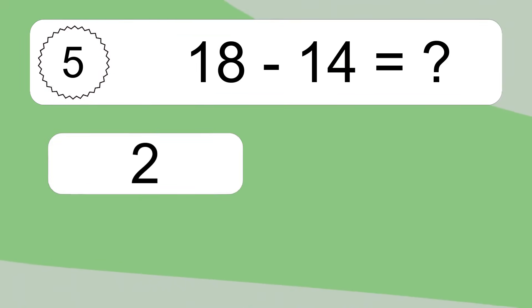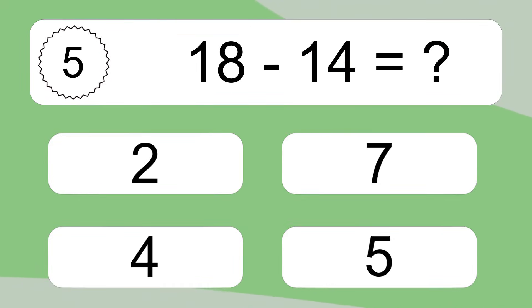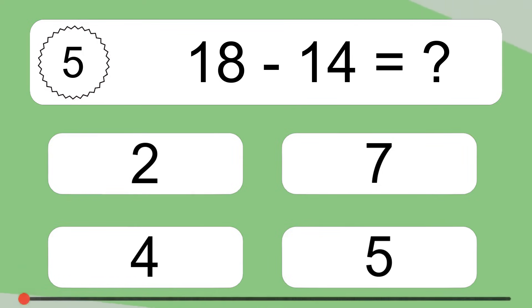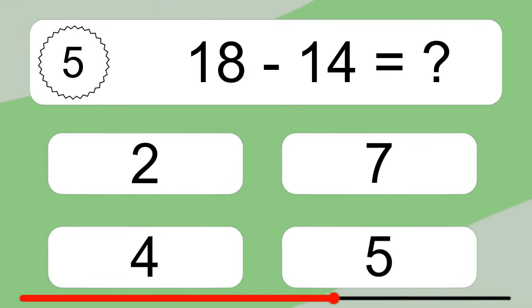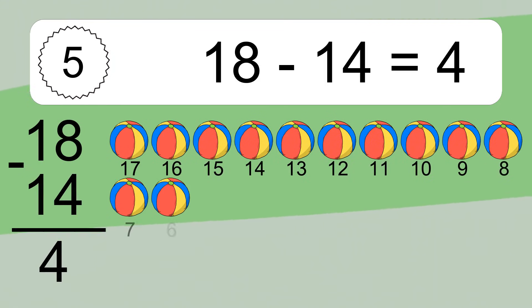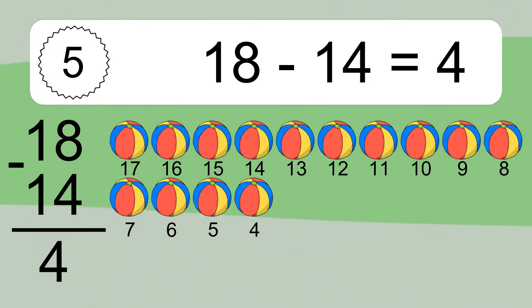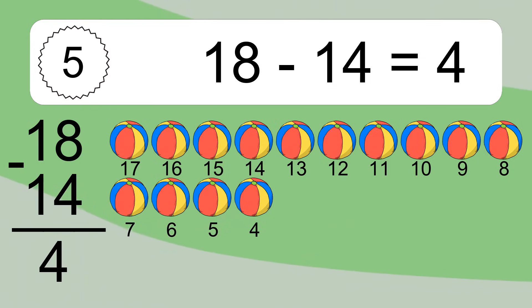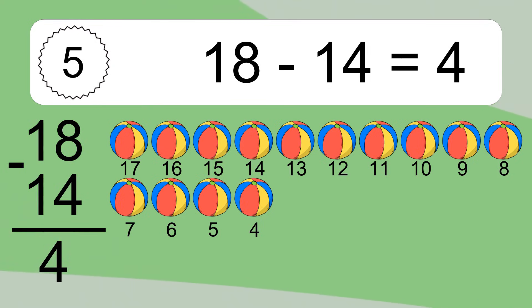18 minus 14 equals what? 18 minus 14 equals 4. Let's count it: 17, 16, 15, 14, 13, 12, 11, 10, 9, 8, 7, 6, 5, 4.